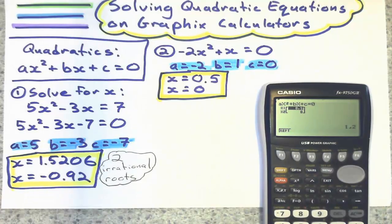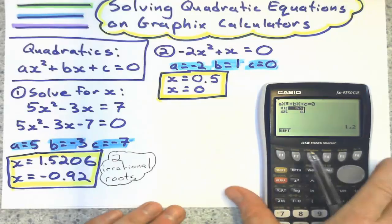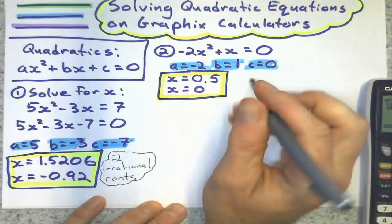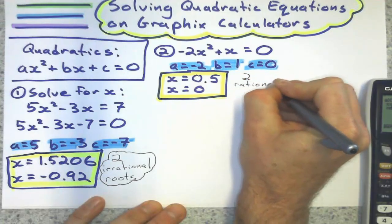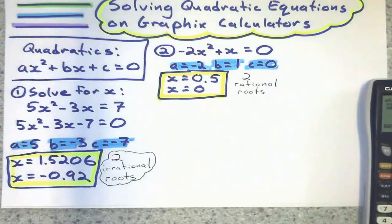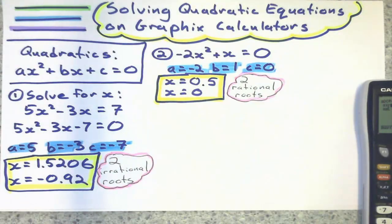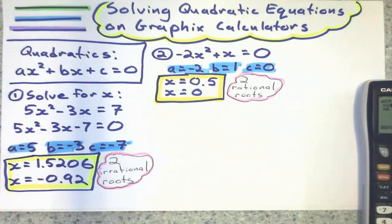Of course, these two roots are not irrational. Those are, those can be expressed as fractions. So here we've got two rational roots, which of course are real as well. Two rational roots. So your calculator won't tell you if it's rational or irrational, but it will tell you if they're real or not. Or if they're not real, I should say.